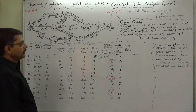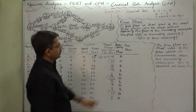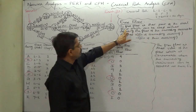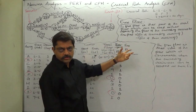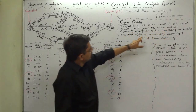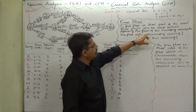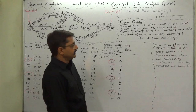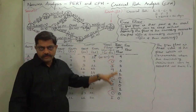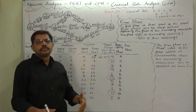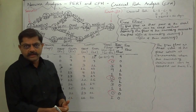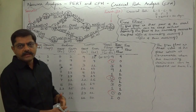First of all, what is free float? Free float is that part of the total float which can be used without affecting the float of the succeeding activities. We can use total float, as we know, to delay or extend or postpone a non-critical activity without affecting the deadline of the project.